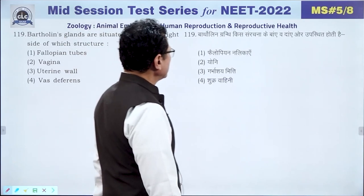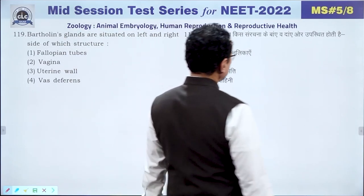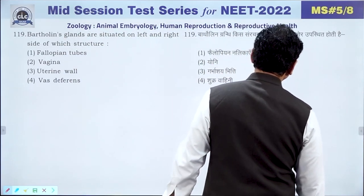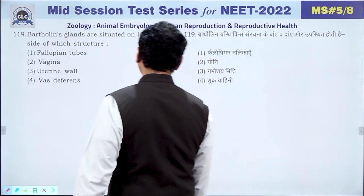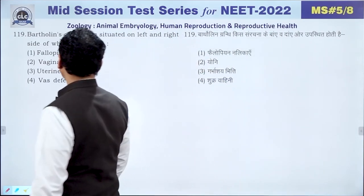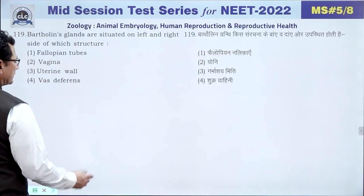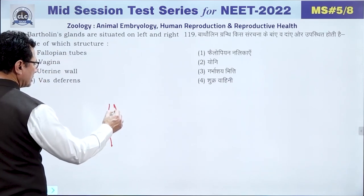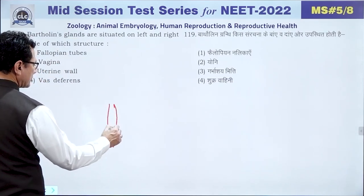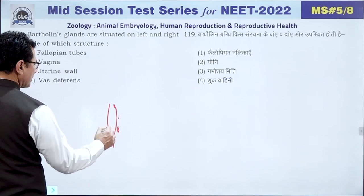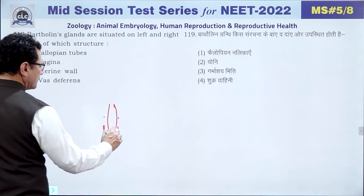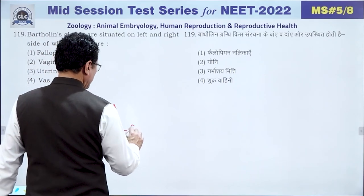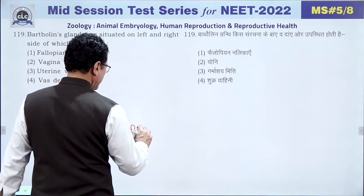Question 119: Bartholin glands are present on the left and right sides of the vagina.